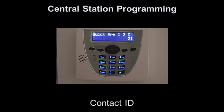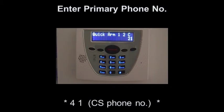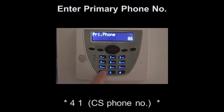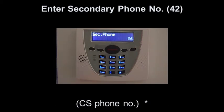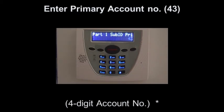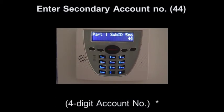To set up communications back to a central station, we enter the primary phone number at star 41 and enter the required phone number followed by star. We now enter the secondary phone number followed by star. We enter the primary four-digit account number followed by star. We enter the secondary four-digit account number — normally the same as the primary — followed by star.